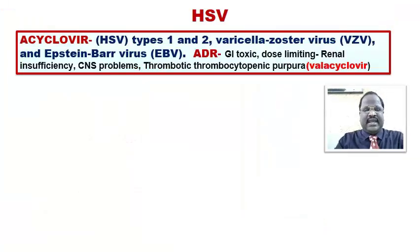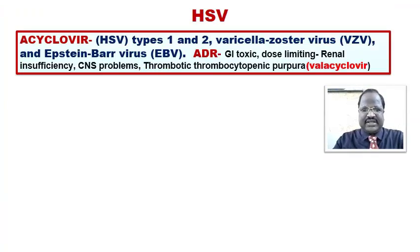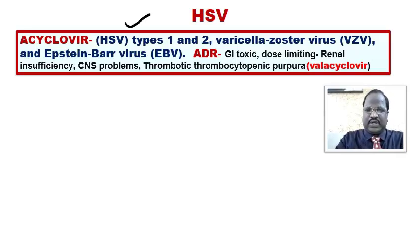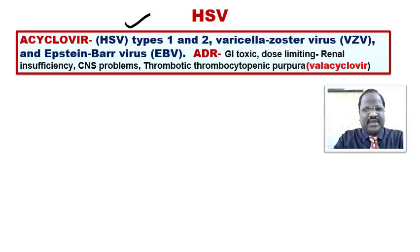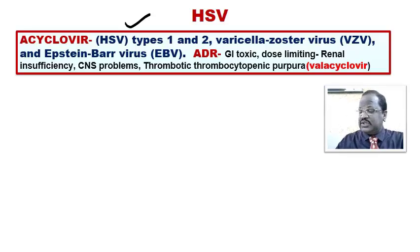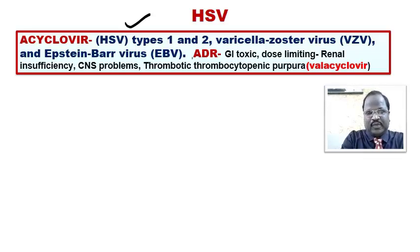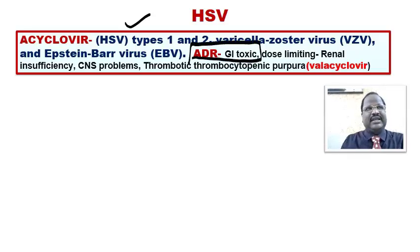Acyclovir is useful for many conditions like herpes simplex 1 and 2, varicella zoster virus infection, and cytomegalovirus infection. Regarding adverse effects, the most important is GI toxicity — nausea, vomiting, diarrhea.